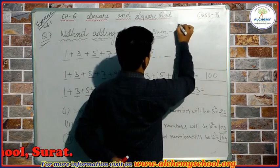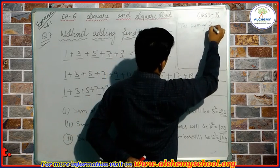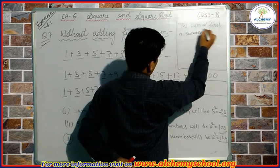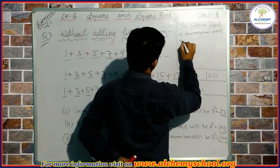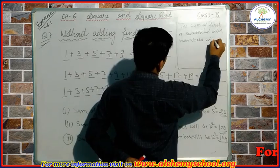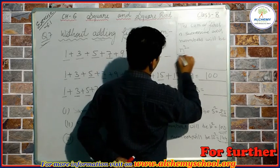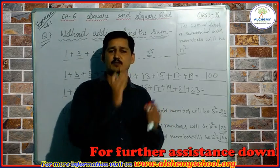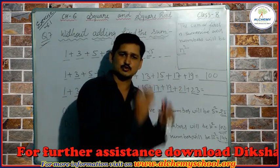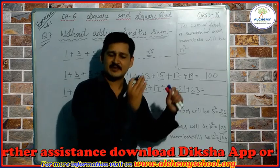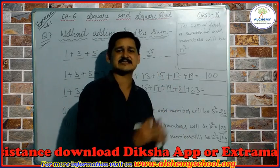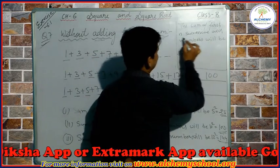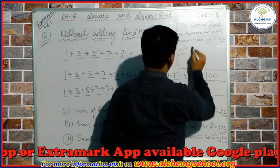As a conclusion for this question, we can write that the sum of n successive odd numbers will be n square. So the sum of the first 1 successive odd number is 1 square, the sum of the first 2 successive odd numbers is 2 square, the sum of the first 3 successive odd numbers is 3 square, and in general the sum of the first n successive odd numbers will be n square.